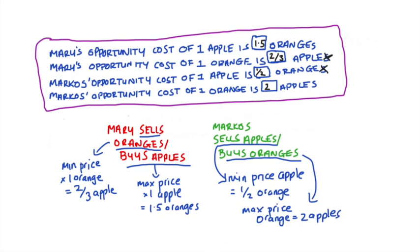And that's it. To recap: I first looked at comparative advantage, which told us the direction of trade — individuals will sell goods in which they have a comparative advantage and buy goods in which they have a comparative disadvantage. Once I understood the direction of trade, I figured out the minimum and maximum prices that each individual would be willing to accept, given their opportunity cost of production for each good. I hope that helped — if it did, please like and subscribe and check out my other videos.